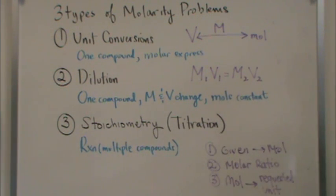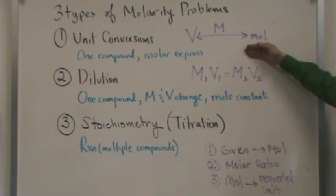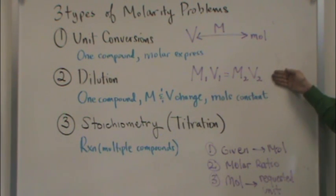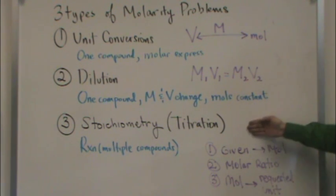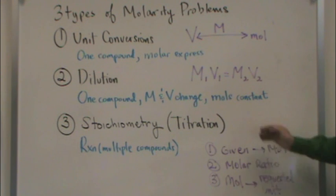Now, one more interesting thing about these three, you can often have a combo problem where you're doing two things at once, usually two of these three. So, for example, you have to do a unit conversion in order to use a dilution formula. Or you have to do a unit conversion while you're doing a stoichiometry problem. Those can be pretty normal. So you may have to ask yourself, do I need to do more than one of these for a given problem?